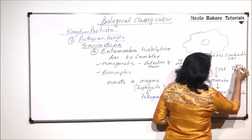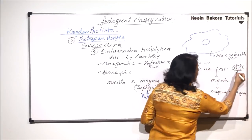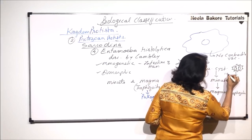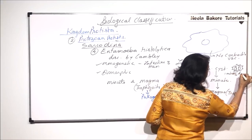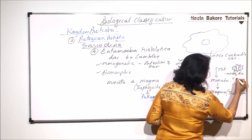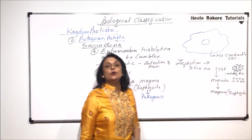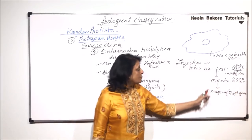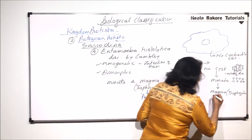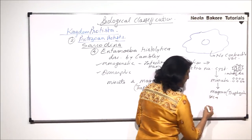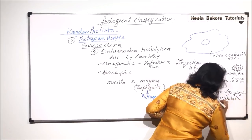From one tetranucleate cyst, eight minuta-stage organisms are released, because the cyst undergoes one mitotic division producing eight minuta-stage forms. These minuta stages then change into magma, and magma secretes histolytic substance.